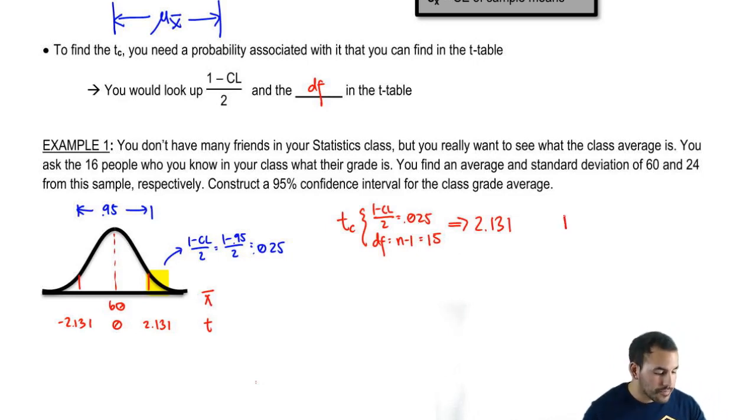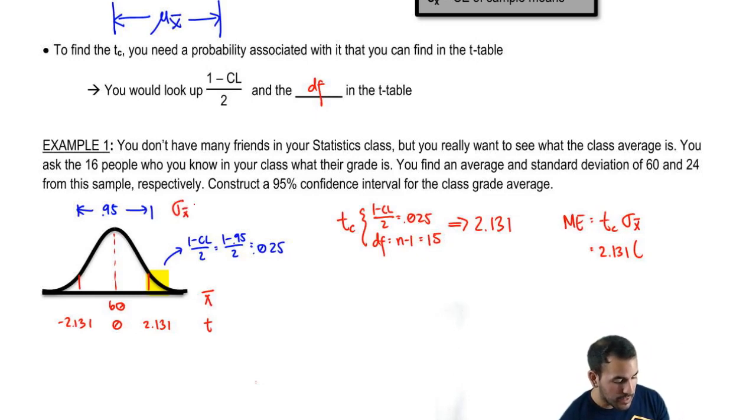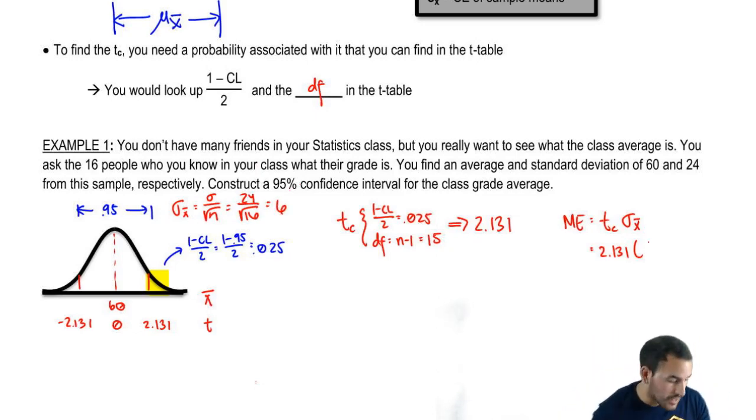And now, we need to find the margin of error. So, the margin of error is the critical T times the standard error. So that's 2.131 times, what was our standard error? Actually, I didn't calculate it yet. So, our standard error for the mean is standard deviation over square root n. So, we have 24 over the square root of 16. So that's 24 over 4, aka 6. So, times 6 equals, and then we get 12.786.